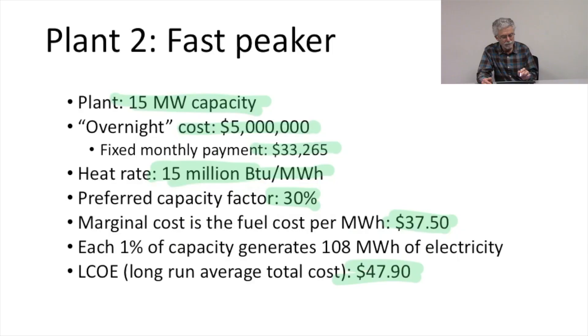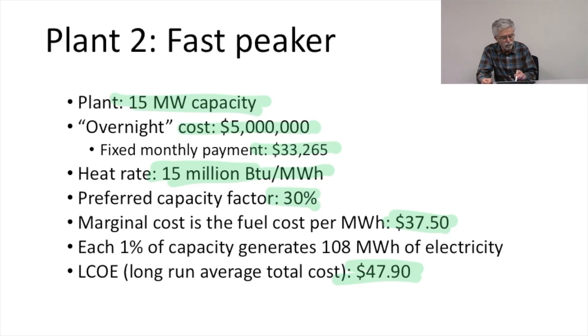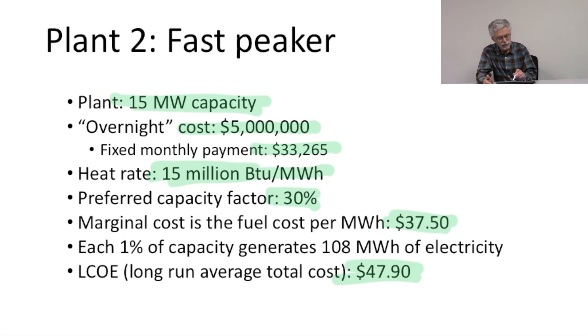Let's move on to plant number two: Fast Peeker. This is a 15 megawatt capacity power plant — it's a gas turbine. That's 15 megawatts of capacity, with an overnight cost of $5 million, which is a much lower initial capital cost.